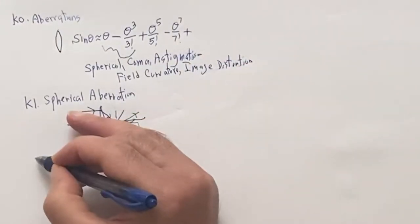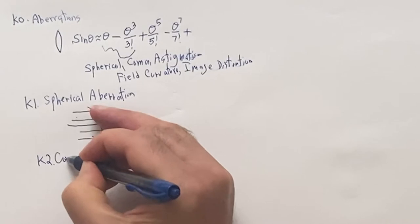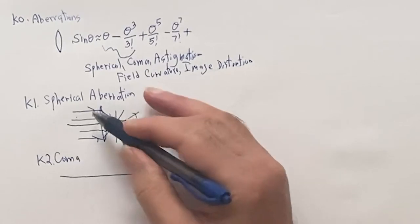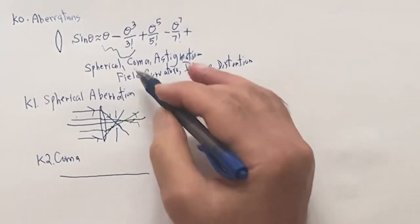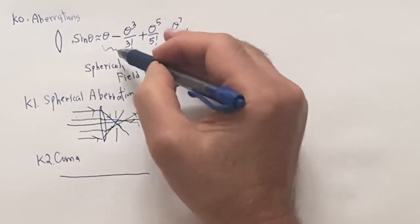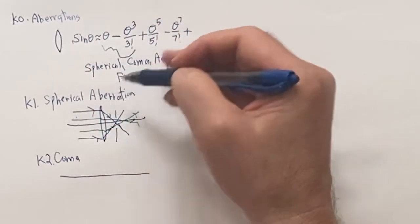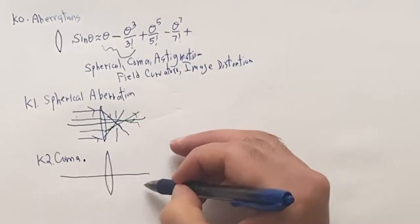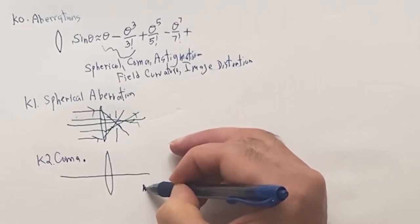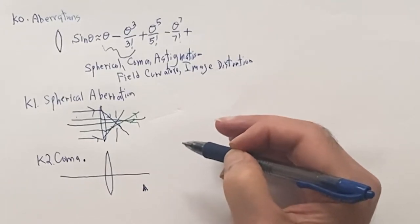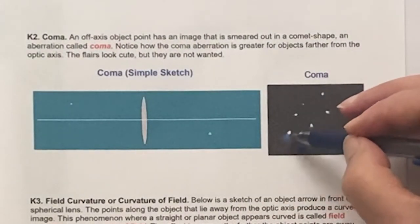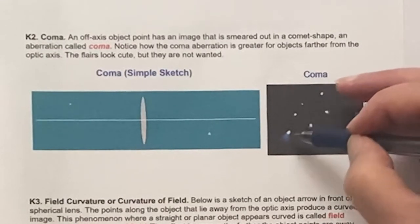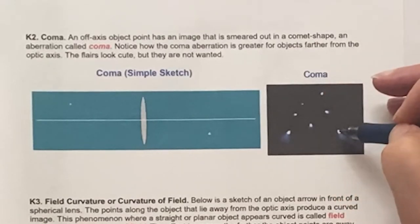Moving on to K2 — coma. If we're off-axis, these are off-axis aberrations. If you're along the axis paraxially, you can neglect them. But off-axis, a point will be imaged not as a point but as a little flare. Like a little comma. They're not cute — it's bad. You want stars to be points of light, not little flares like that.